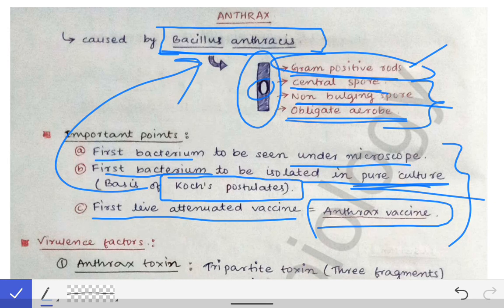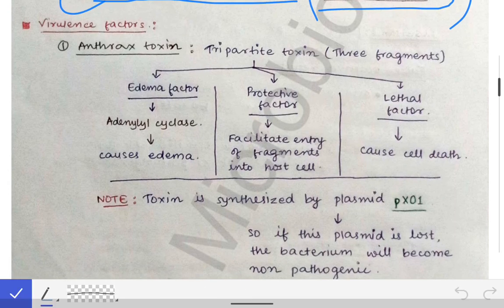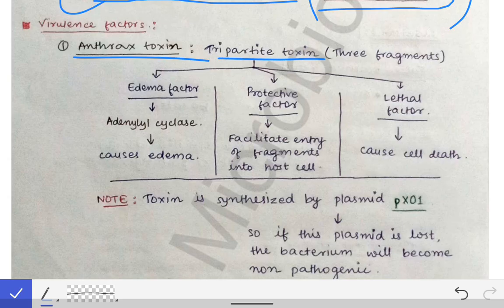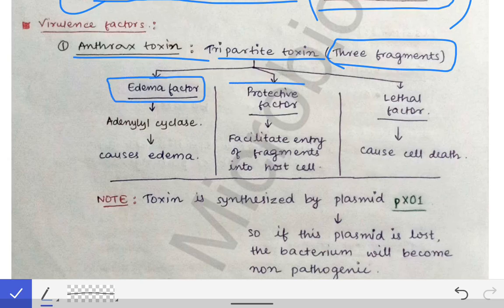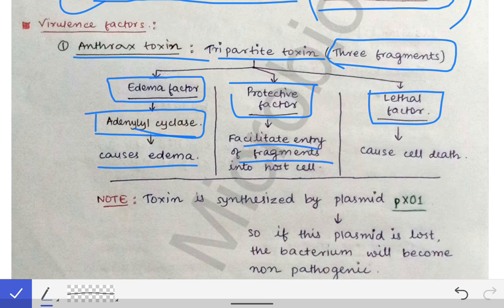Now, the virulence factor of anthrax — the virulence of Bacillus anthracis is due to the anthrax toxin. The anthrax toxin is a tripartite toxin, meaning it has three fragments: the edema factor, the protective factor, and the lethal factor. The edema factor acts as adenylyl cyclase and causes edema around the wound. The protective factor facilitates the entry of fragments into the host cell. The lethal factor causes cell death, as evident from its name.